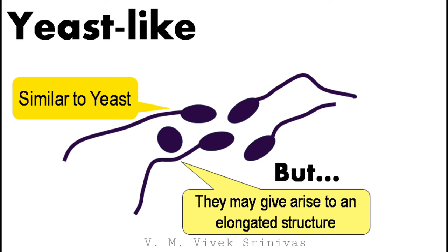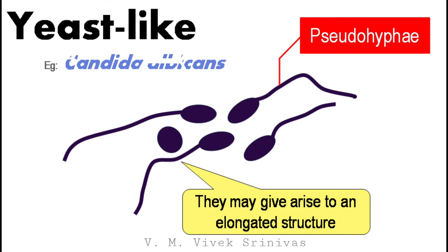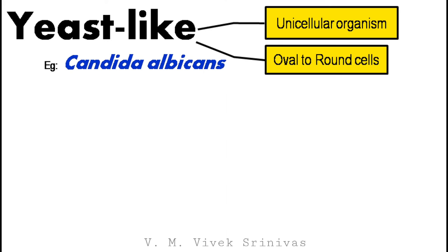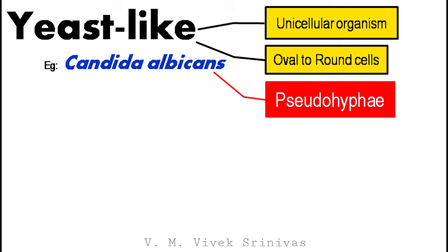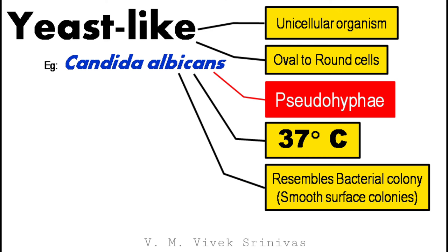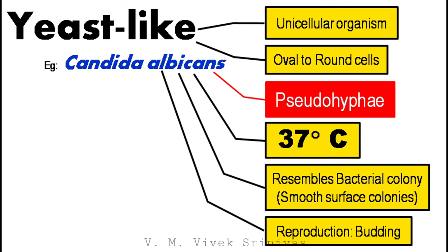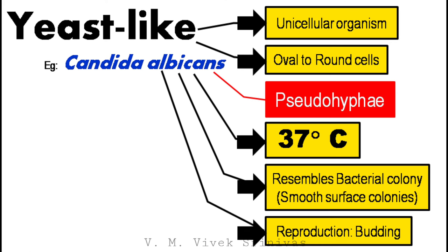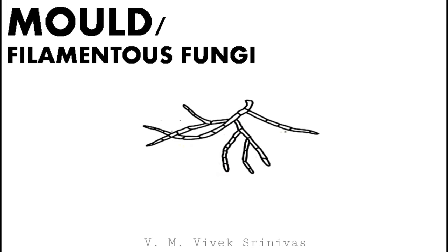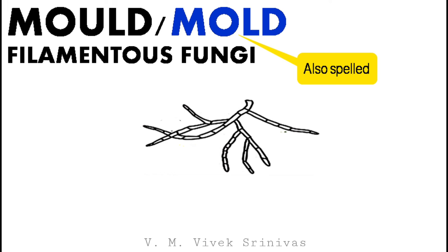Yeast-like fungi are similar to yeast but give rise to an elongated structure called pseudohyphae. Candida albicans is an example of pathogenic yeast-like fungi. In summary, yeast-like organisms are also unicellular, oval to round-shaped, grow well at 37°C, form smooth surface colonies after incubation, and reproduce by budding — all features similar to yeast — but they possess pseudohyphae.